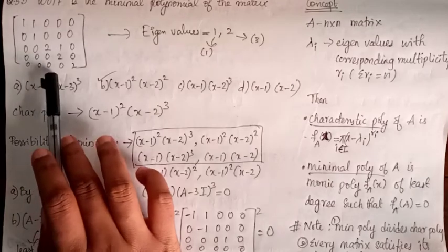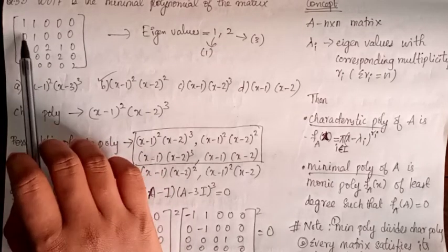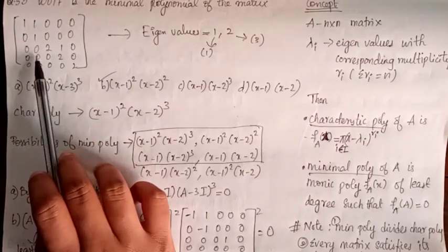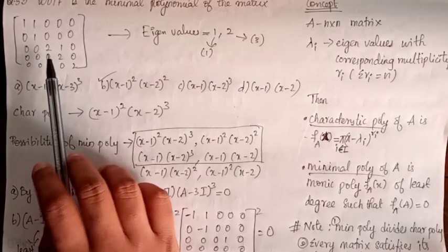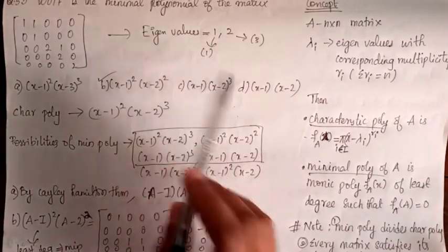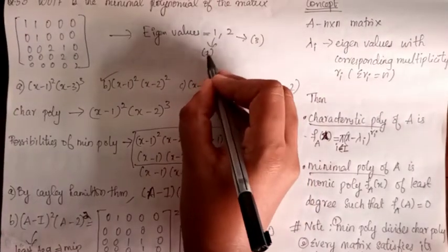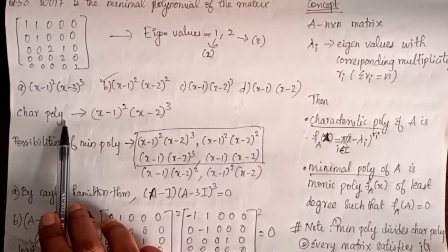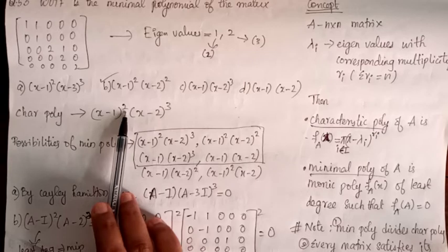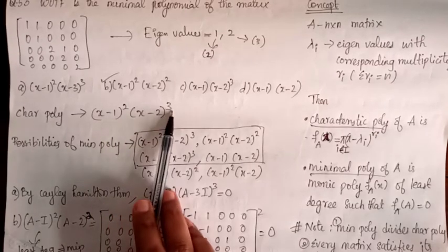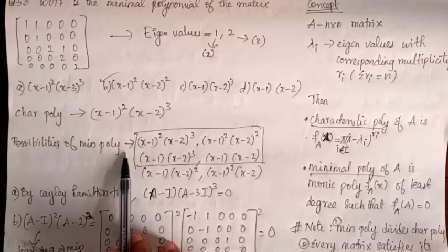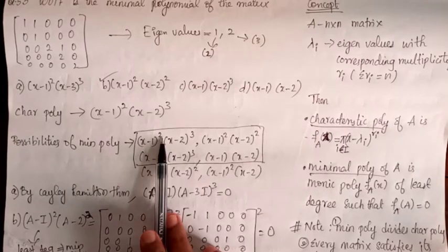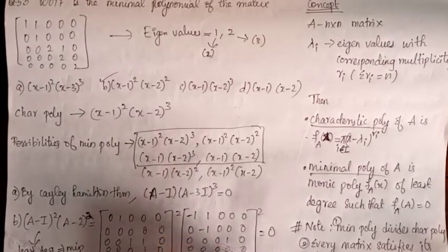This is an upper triangular matrix. The diagonal elements are 1 and 2. The multiplicity of eigenvalue 1 is 2 and the multiplicity of eigenvalue 2 is 3. So the characteristic polynomial is (x-1)²(x-2)³.